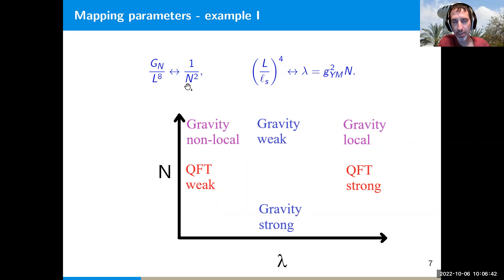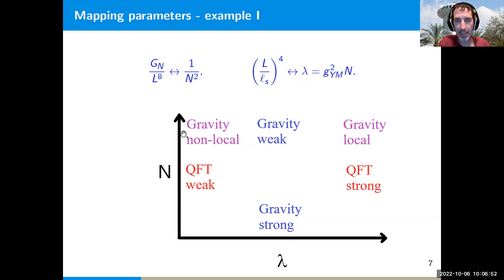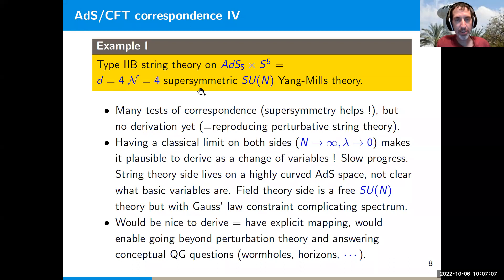The important point is that there is a corner where N is large and λ is small, in which both theories are weakly coupled — the gravity is not local on that side, but ℏ is small for both theories so both can be described semi-classically. This typically doesn't happen in QFT dualities but does happen in AdS/CFT. So far, however, we do not have any derivation of this correspondence; we have many tests mostly thanks to supersymmetry.